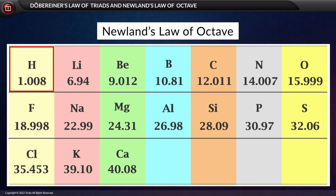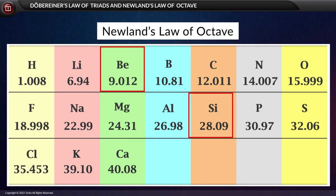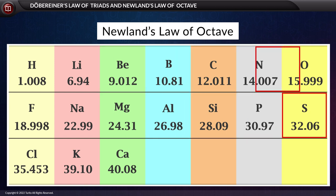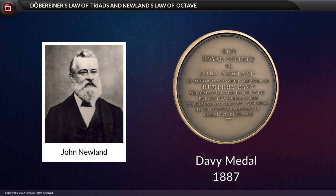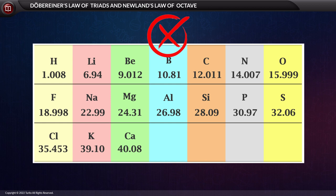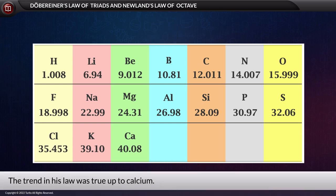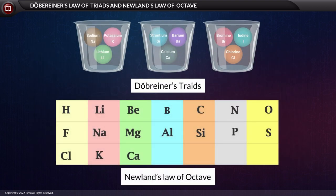H is the first element and F is the eighth element; thus fluorine shows similarity in properties with hydrogen. Similarly, Na shows similarity with Li, Mg with Be, Si with C, P with N, S with O, and so on. Newlands received the Davy Medal in 1887 from the Royal Society of London. However, his law was dismissed as well, because the trend was true only up to calcium.